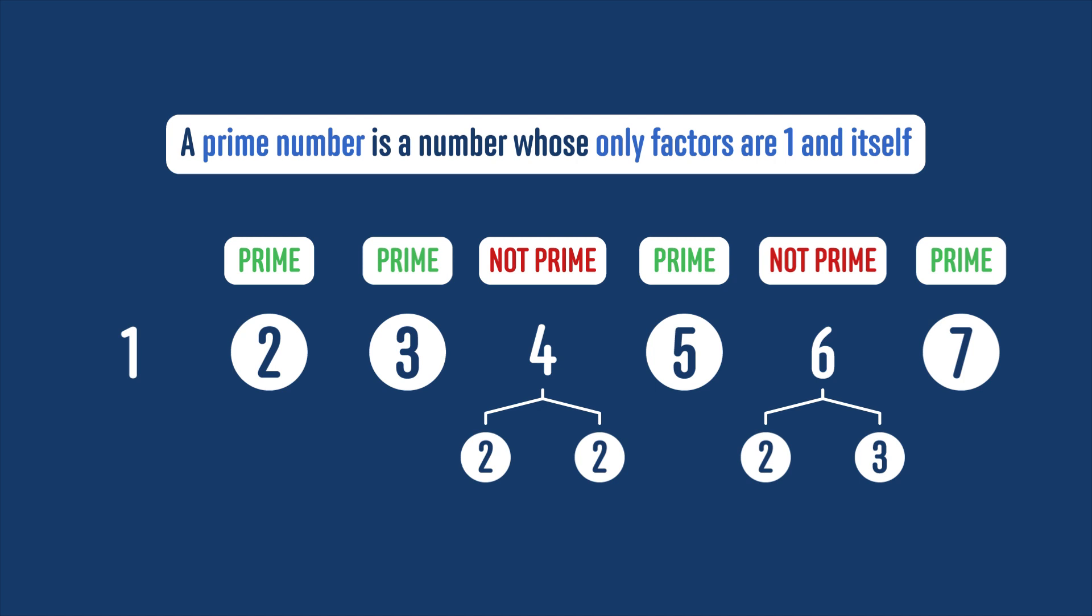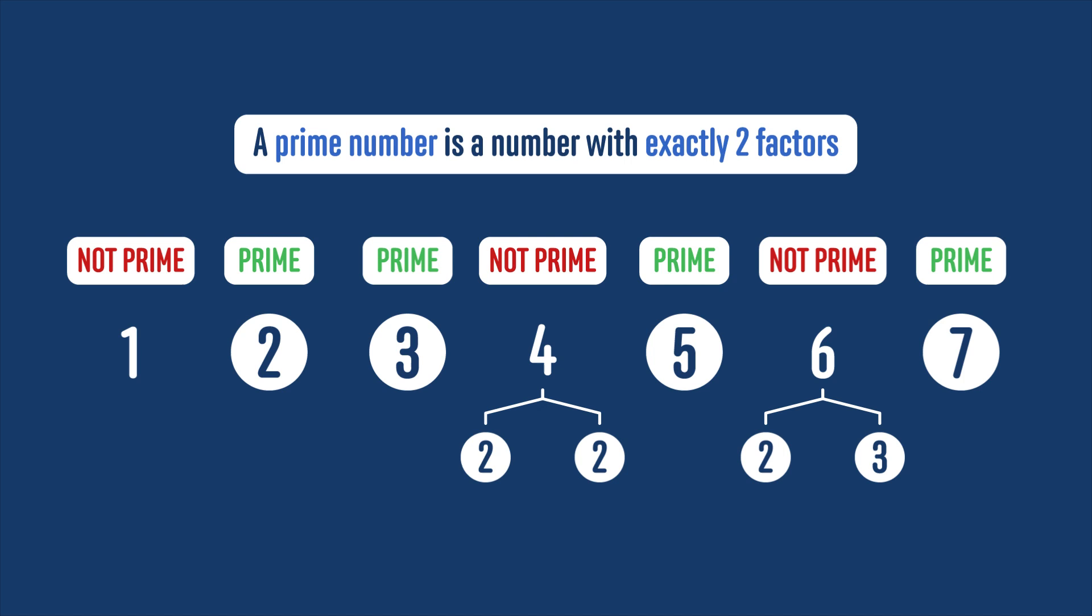Although 1 also can't be broken down further, apart from as 1 times 1, we don't consider it prime. So as not to make it a special case, we sometimes say that a prime number is a number with exactly two factors, so it's clear 1 isn't included.